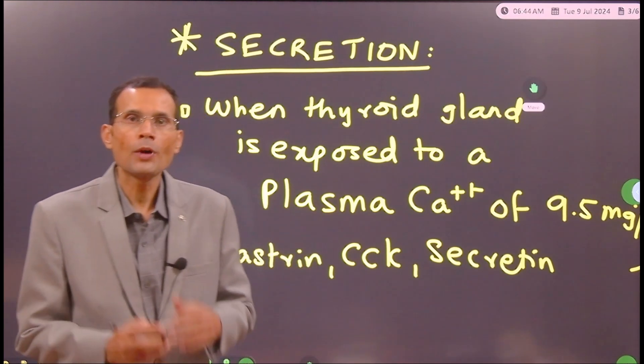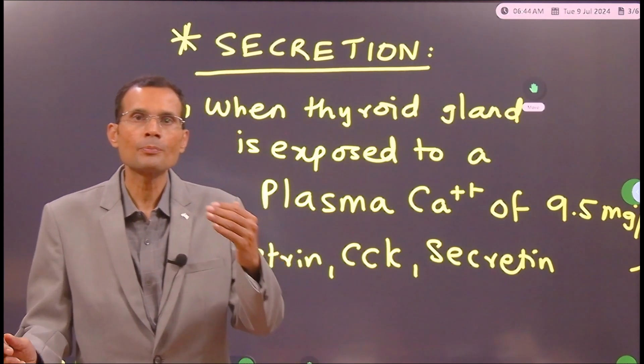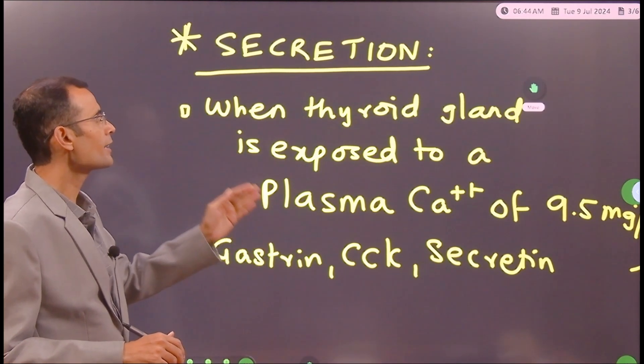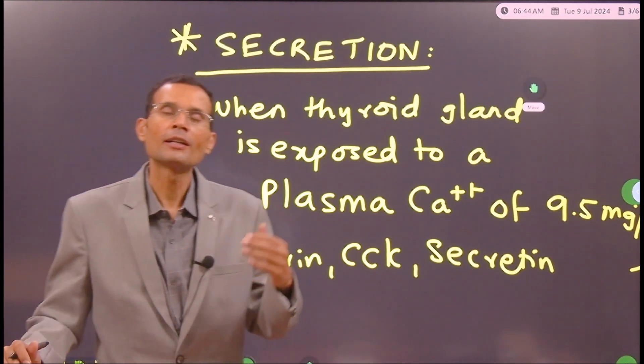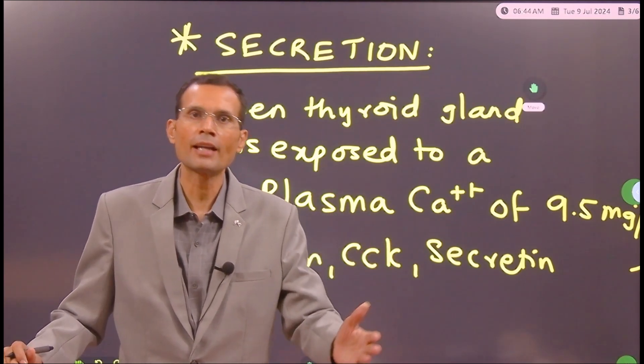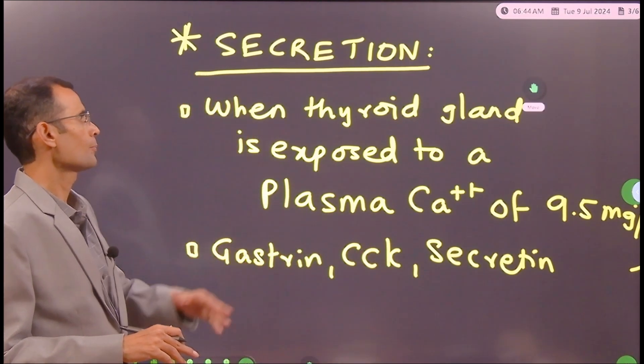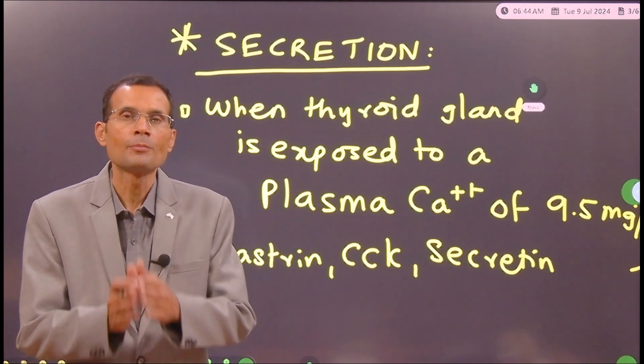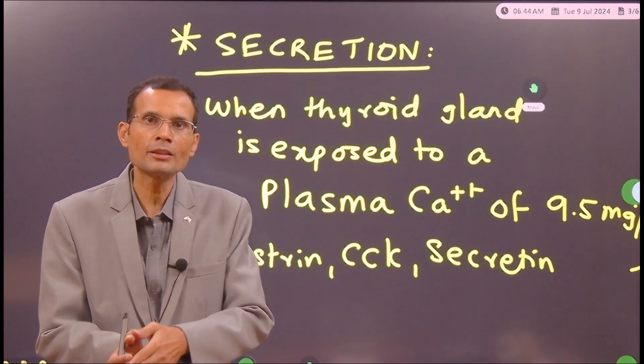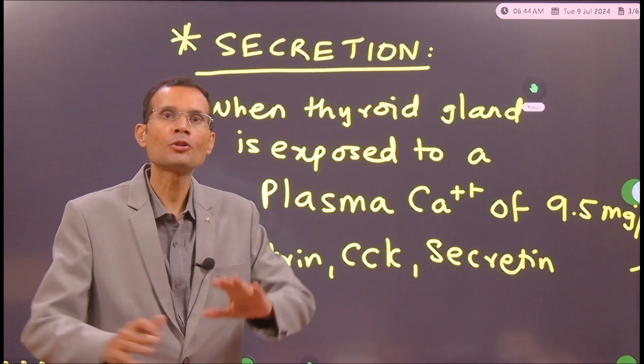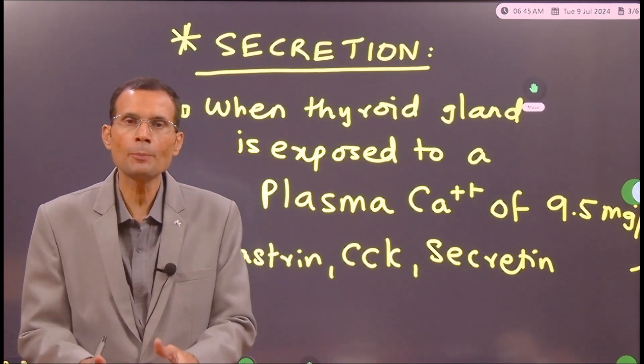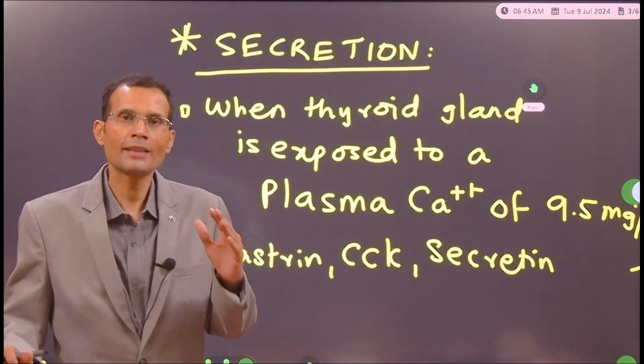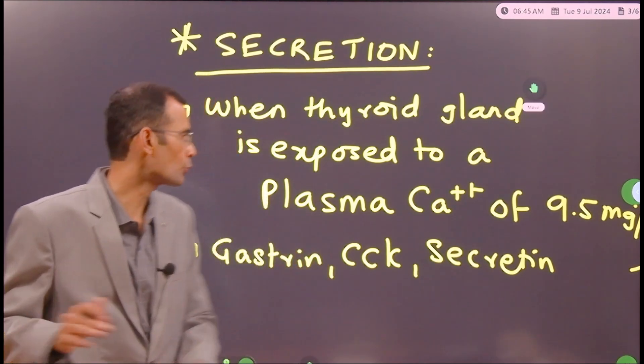Now, secretion. When is it that calcitonin is called upon into action? When the thyroid gland is exposed to a plasma calcium of 9.5 mg% or more. Whenever that happens, calcitonin will come into action and deposit the plasma calcium onto the bones. So remove the plasma calcium and deposit into the bones - that's the main action of calcitonin hormone.